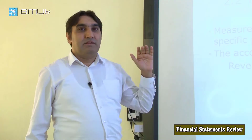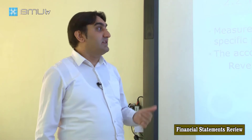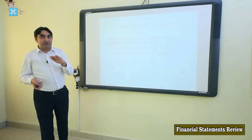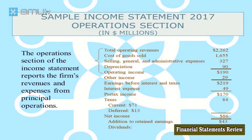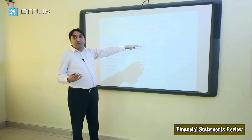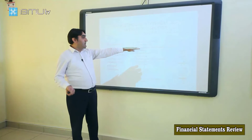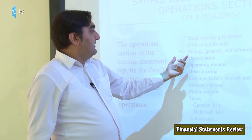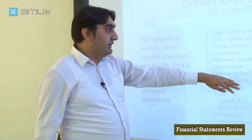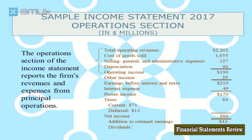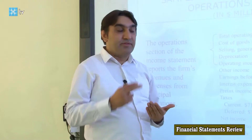The second financial statement is the income statement. It shows the performance of a company through a period — generally a year or a quarter. It starts with operating revenues, which is what the company has sold through the year. Then we subtract cost of goods sold, selling general and administrative expenses, and depreciation of fixed assets. After deducting all these costs, we get operating income, which is an important indicator showing what the company's operations have generated in terms of cash.